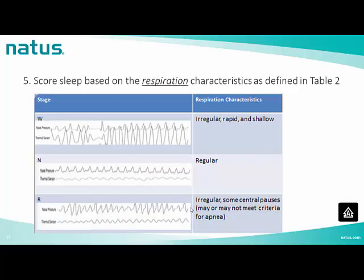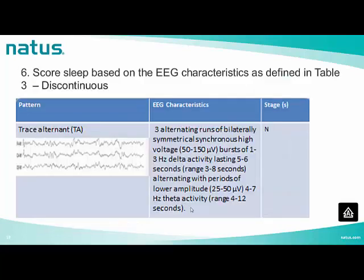According to respiration: in stage W, respiration is irregular, rapid, and shallow. In stage N, respiration is regular. In stage R, respiration is irregular, with some central pauses that may or may not meet criteria for apnea.